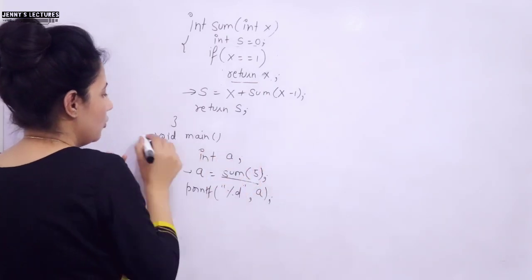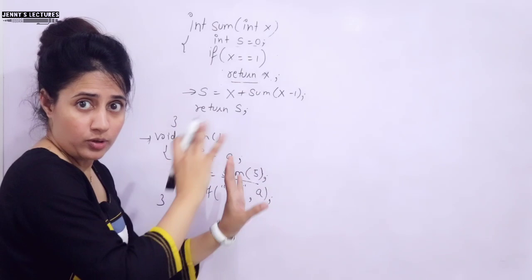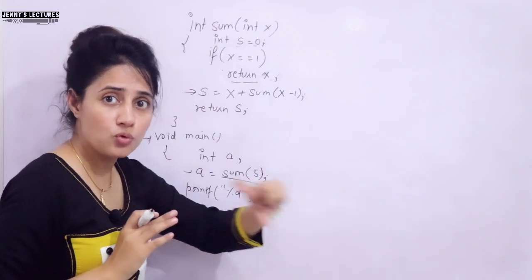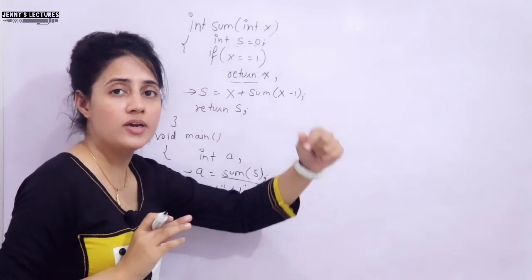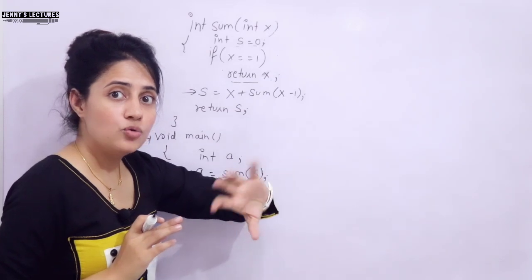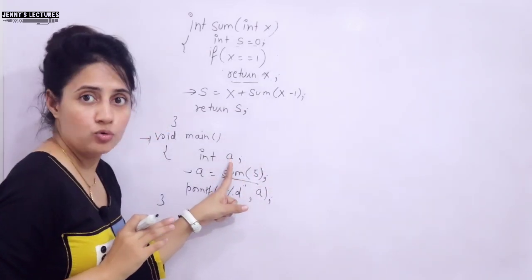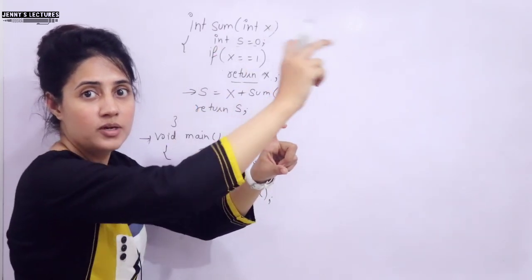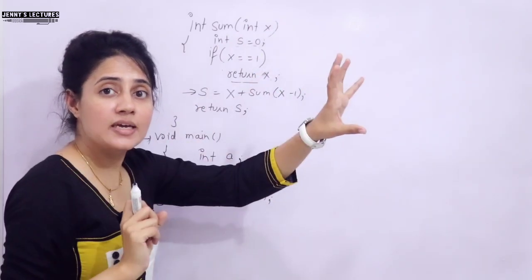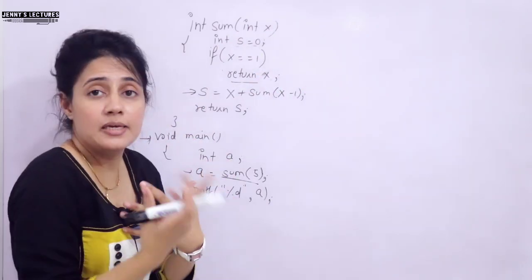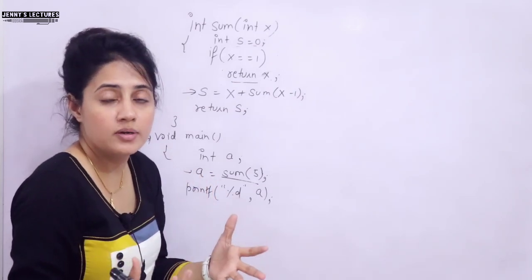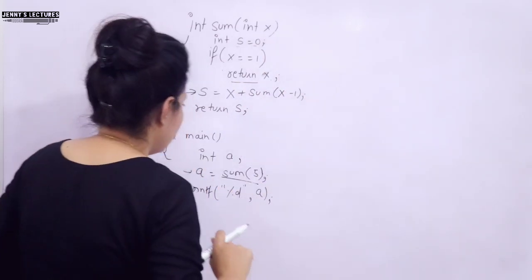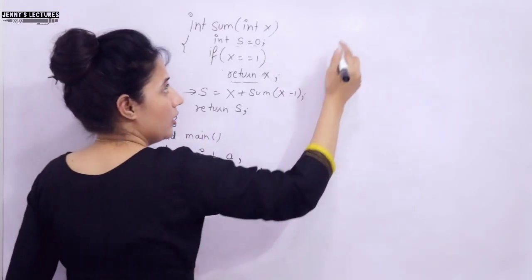We will solve this problem with the second method that takes less time. When the program executes, memory is allocated in three sections: a code section, a stack memory, and a heap memory. Variables we create are directly accessed from stack memory. You cannot directly access heap memory — that memory is accessed using pointers, like when we dynamically allocate memory using malloc and calloc.